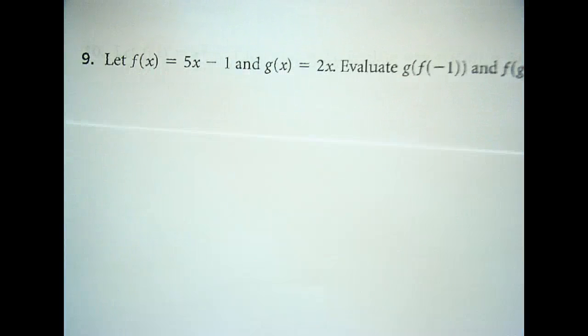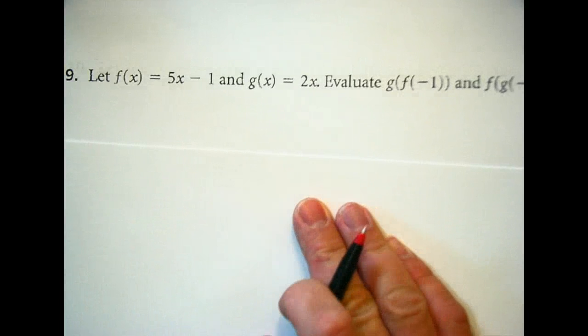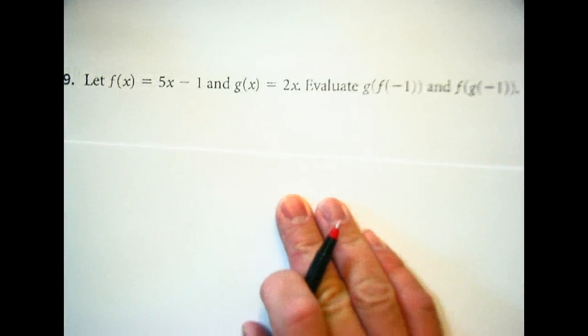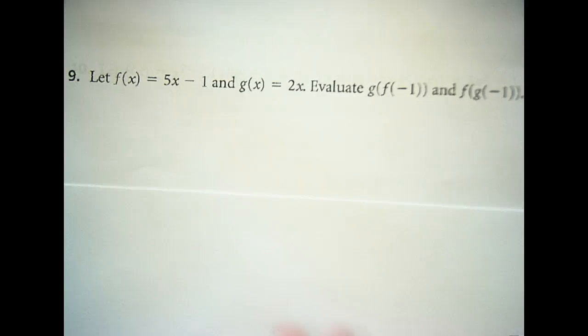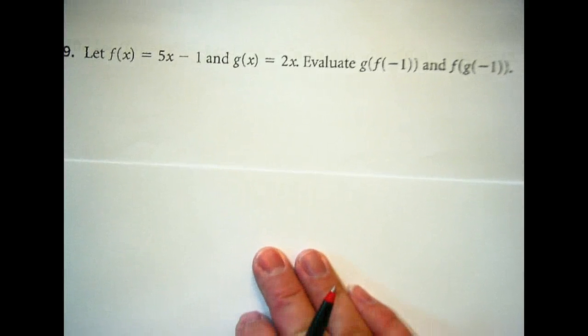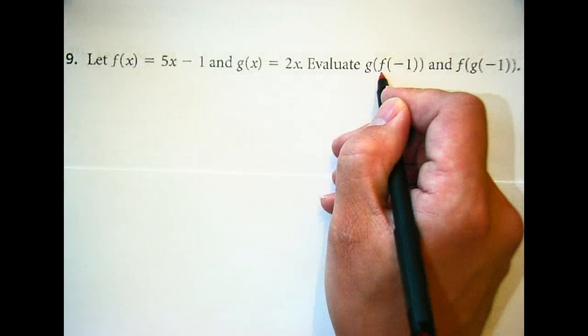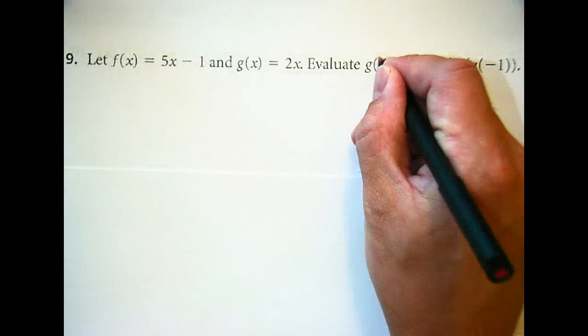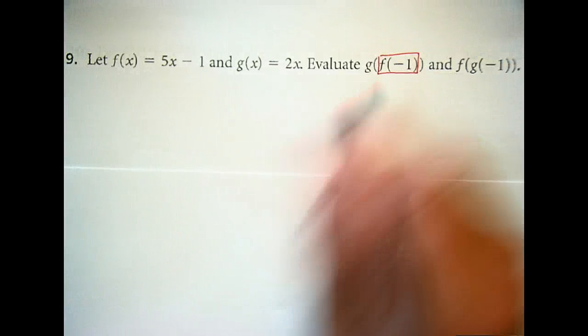Let's take a look at number 9. Number 9 says, let f(x) = 5x - 1 and g(x) = 2x. Evaluate g(f(-1)) and f(g(-1)). So you guys have hopefully completed this to the best of your ability. If I'm doing g(f(-1)), that means I'm taking this part, I'm working from the inside out. I'm starting with the f(-1).